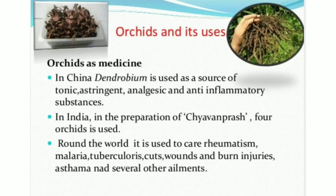Orchids and their uses — Orchids as medicine: In China, Dendrobium is used as a source of tonic, astringent, analgesic and anti-inflammatory substances. In India, four orchids are used in the preparation of Chyawanprash. Round the world, orchids are used to treat rheumatism, malaria, tuberculosis, cuts, wounds and burn injuries, asthma, and several other ailments.